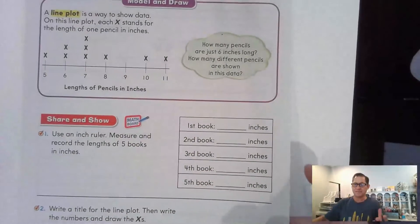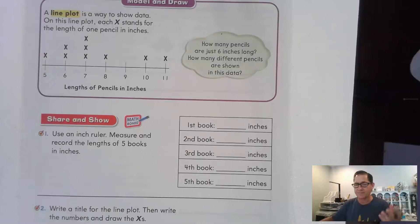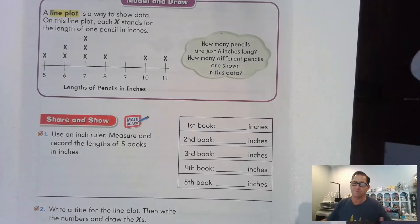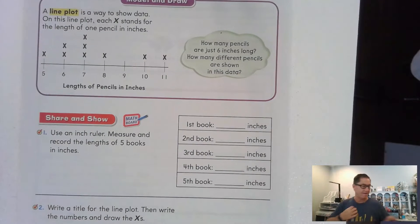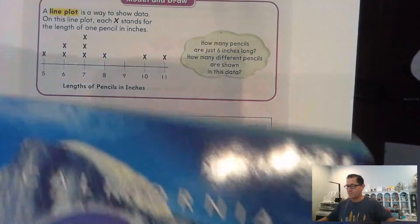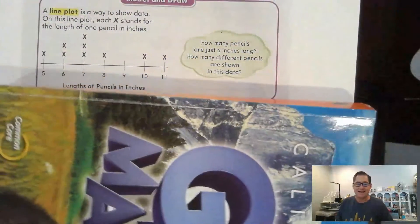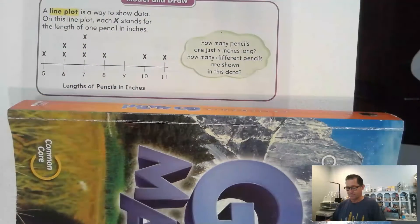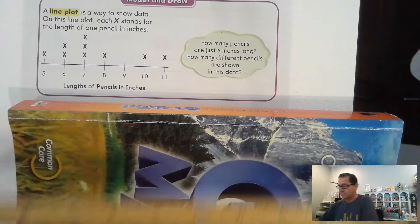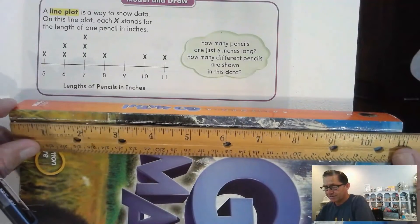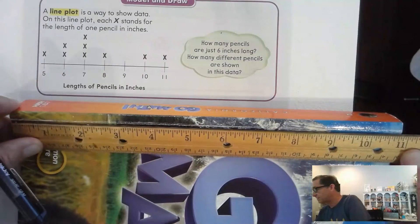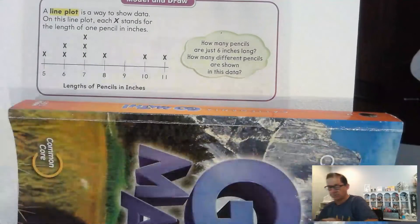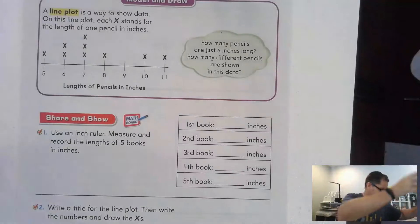Now find five books — textbooks, reading books, or any books in the classroom. I'm going to use my math book. We're going to measure the length of these objects to the nearest inch. My first one looks like 11 inches.